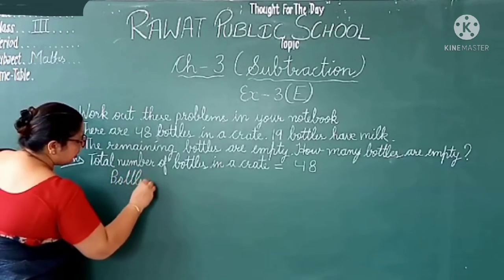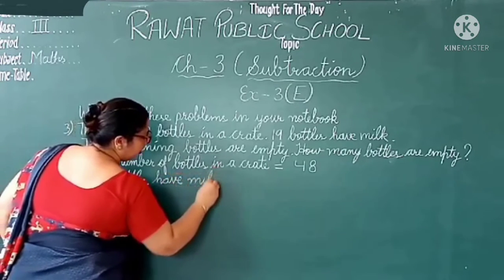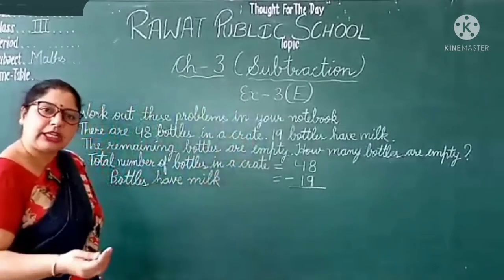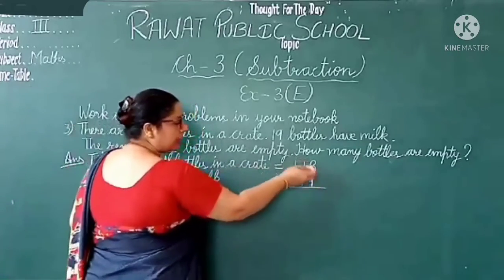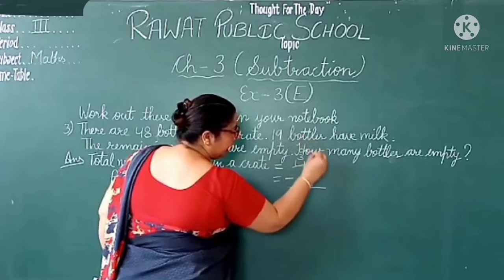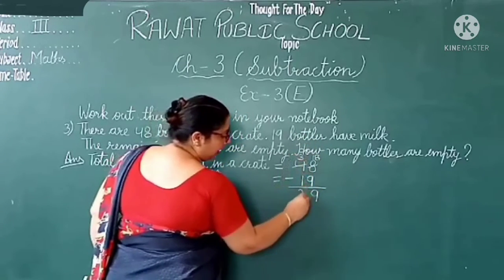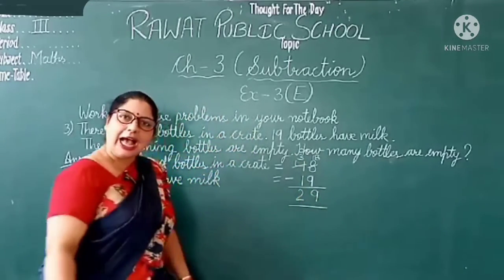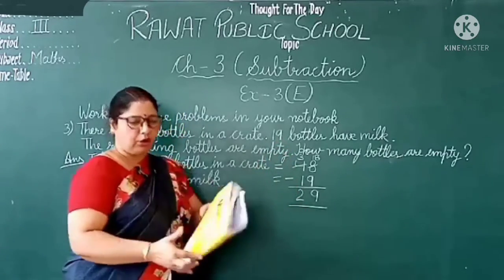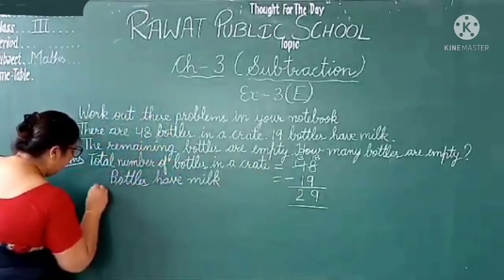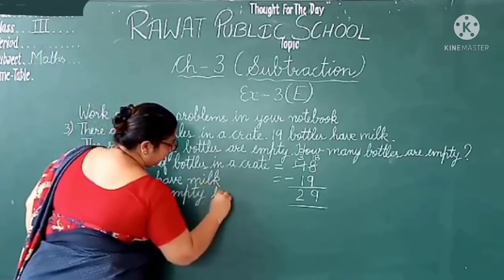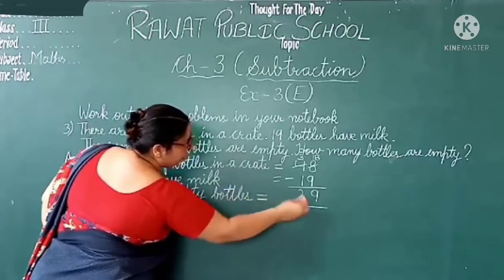Write down: bottles with milk — how many bottles have milk? 19. So we subtract 19 from 48. 8 is smaller than 9, so we take one carry from 4. Here it is 3 and this becomes 18. 18 minus 9 is equal to 9, and 3 minus 1 is equal to 2. So 29 bottles are empty. Total bottles 48, milk bottles 19, so 48 minus 19 is equal to 29. Number of empty bottles is equal to 29.